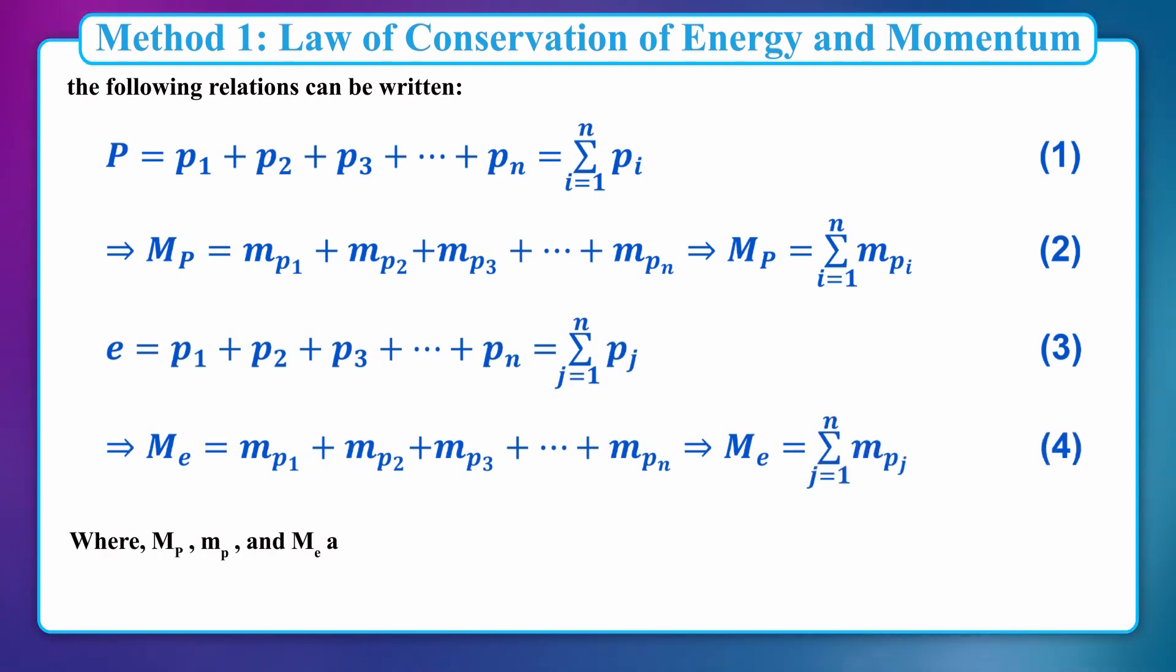Where m_p, m_γ, and m_e are the masses of proton, photon, and electron respectively. Now we calculate the energy of each side of equation one.